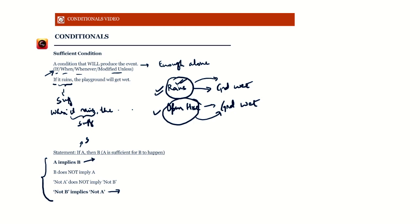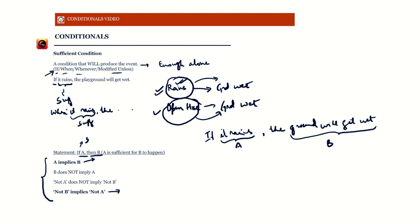In our example, A is 'it rains' and B is 'the ground will get wet,' following the structure 'if A then B.' So A implies B means that if I know it rained today, then I know for sure that the ground did get wet. If A happened, then B happened for sure — this is what we mean by A implies B.